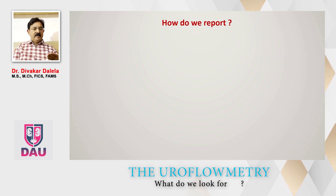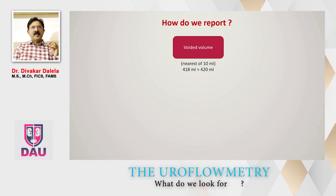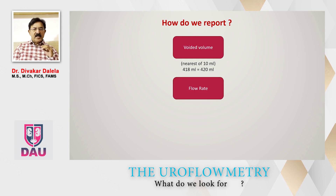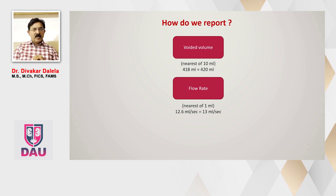When we have the graph in front of us, how do we report these parameters? The voided volume is reported to the nearest 10 ml. For example, if the patient has voided 418 ml, we will write it as 420. The flow rates are reported to the nearest 1 ml per second. If it is 12.6 ml per second, we will report it as 13 ml per second. So that adjustment we do, then we report the results.